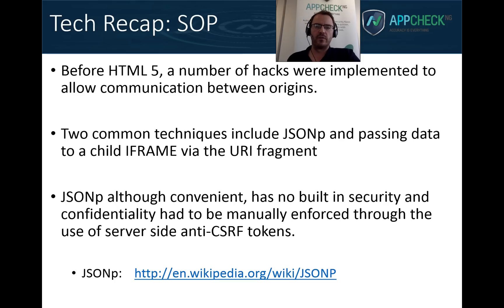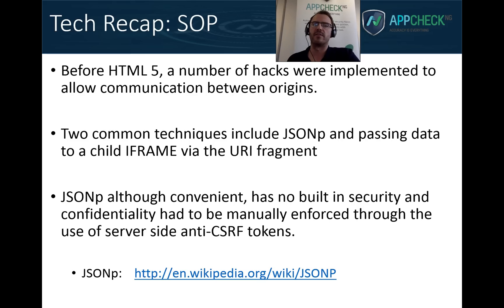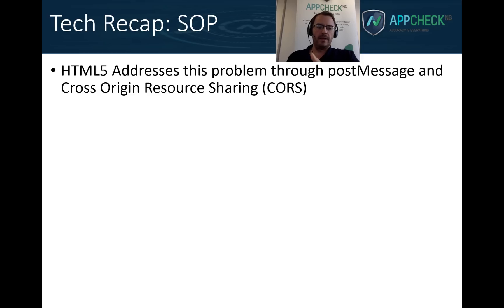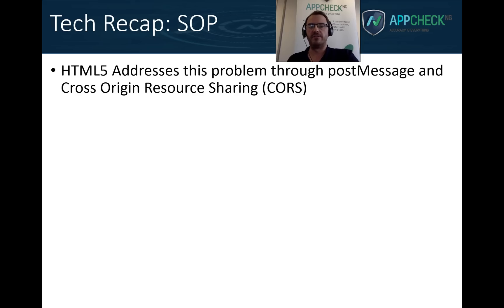JSONP is hopefully something that will disappear over time. HTML5 offers a much more secure and much neater way of doing that same cross-origin communication. HTML5 addresses the problem of not being able to communicate between origins — and the two options are: cross-origin resource sharing, which handles network requests, and PostMessage, which handles the ability to access locally loaded iframes from other origins.